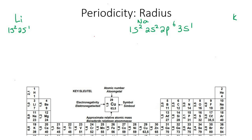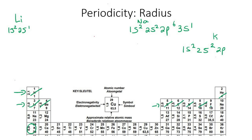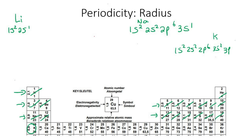For potassium, you go through row 1 — S block, 2 electrons. Then row 2 — S block: 1 and 2; P block: 1 through 6. Then row 3 — S block: 1 and 2; P block: 1 through 6. Then you get to row 4, where you enter the S block with one electron.